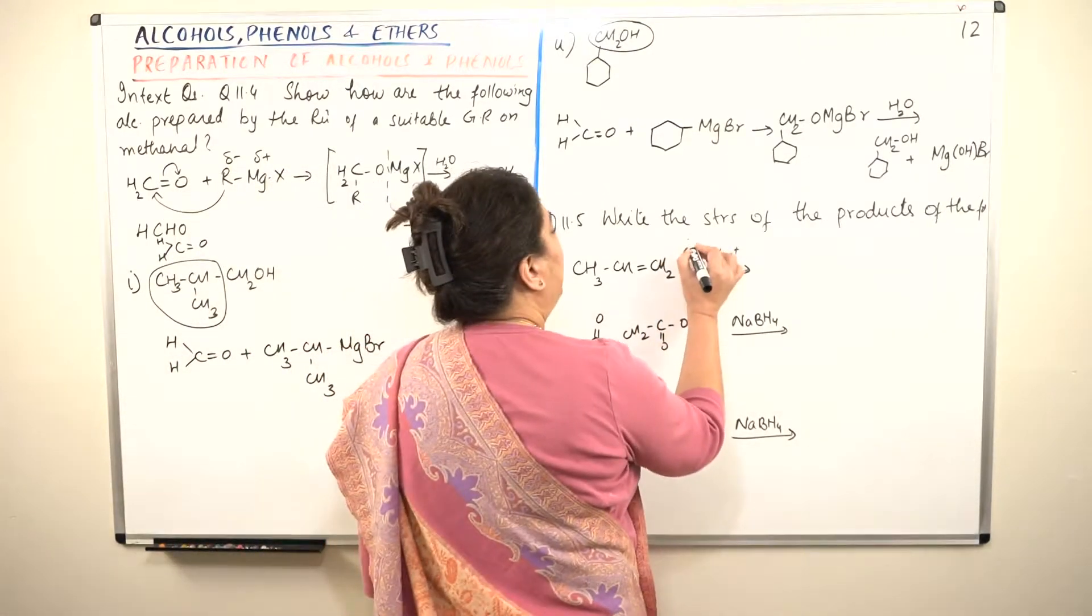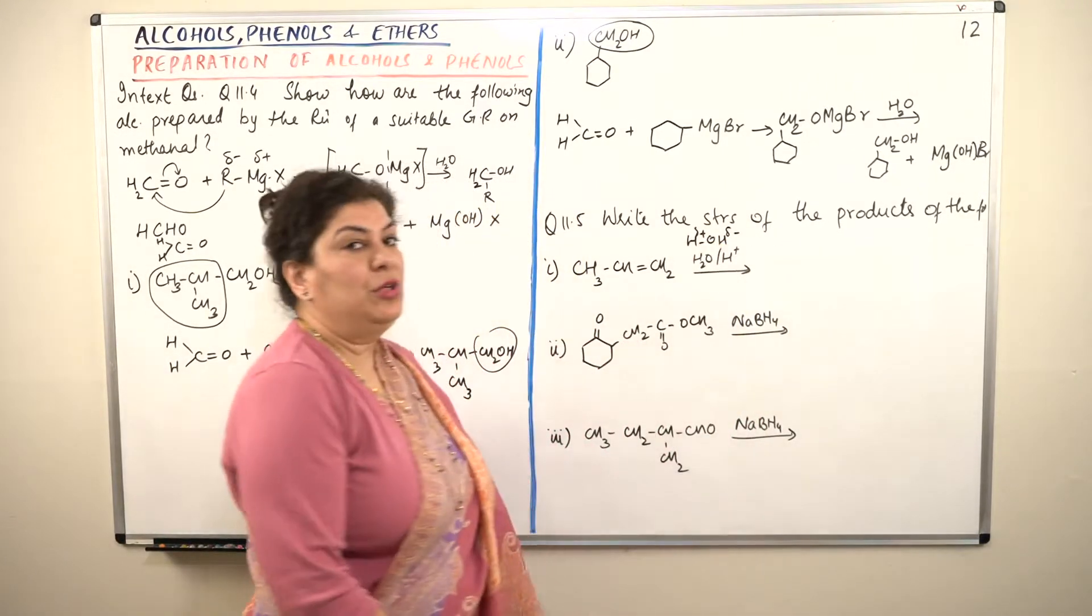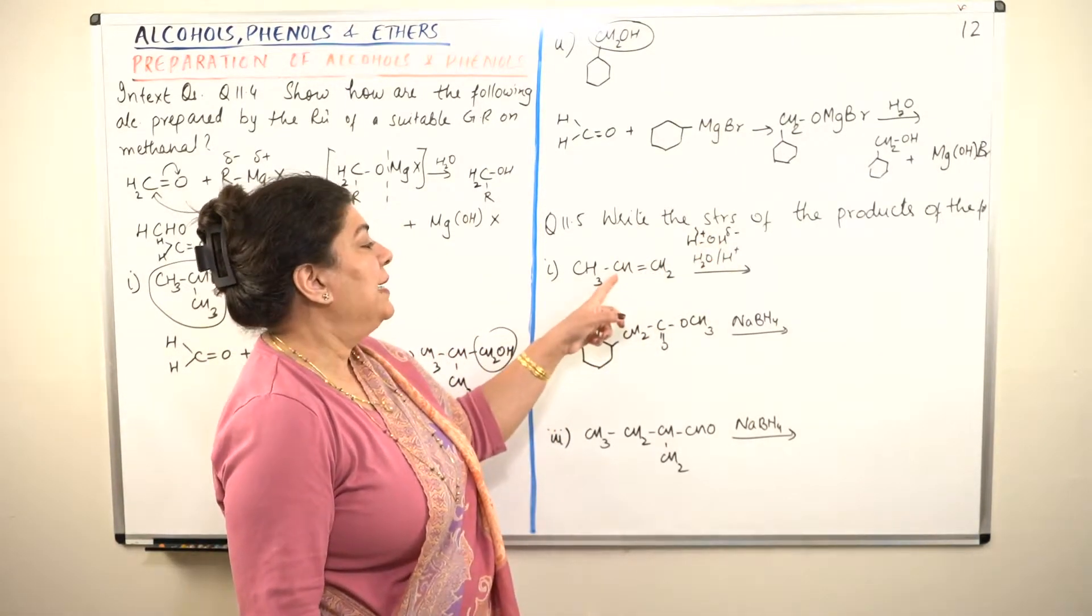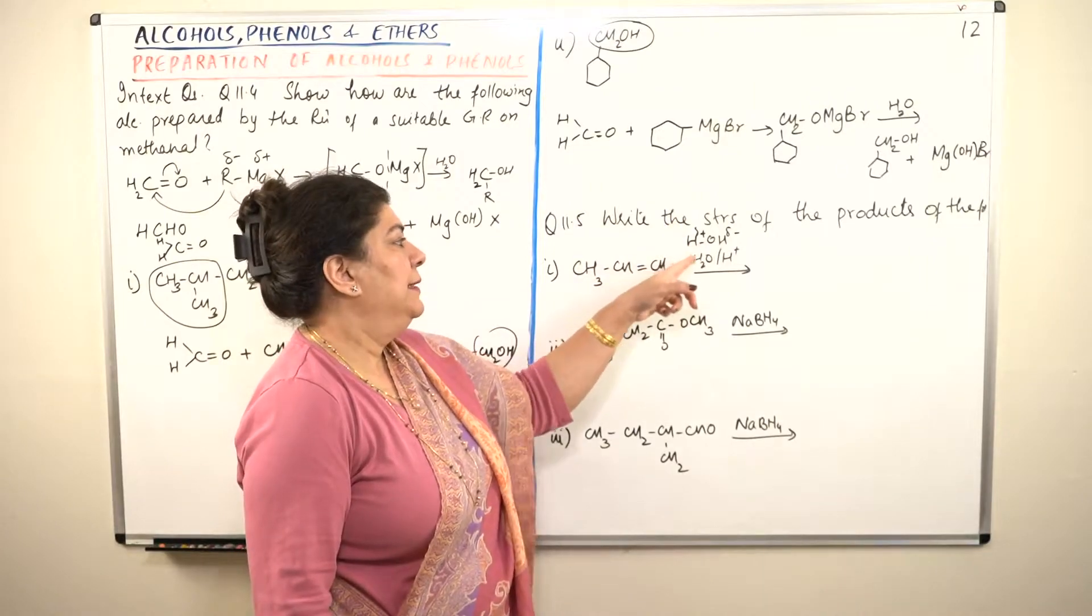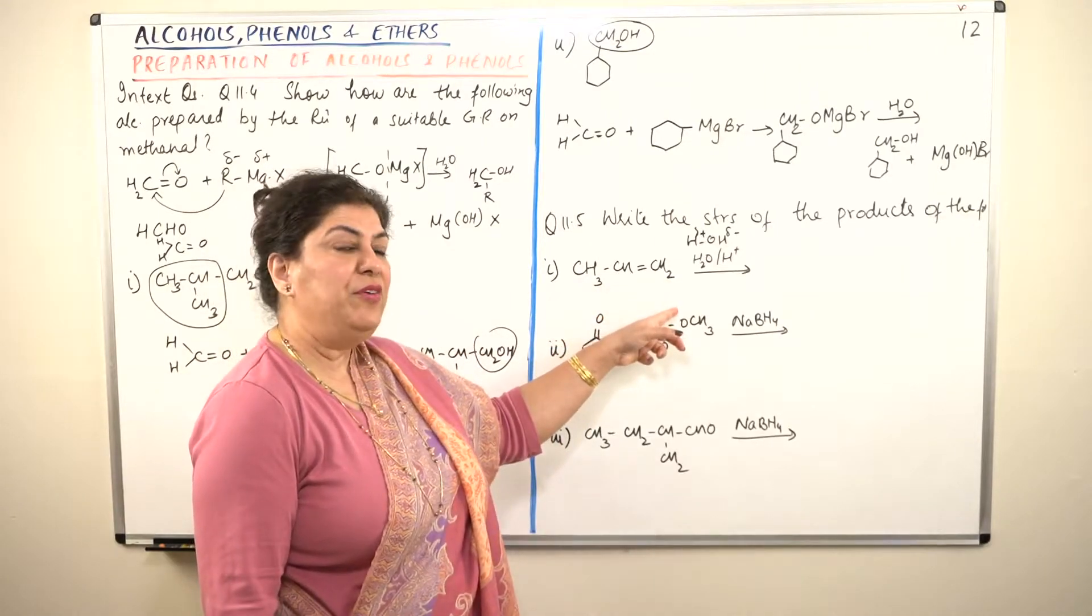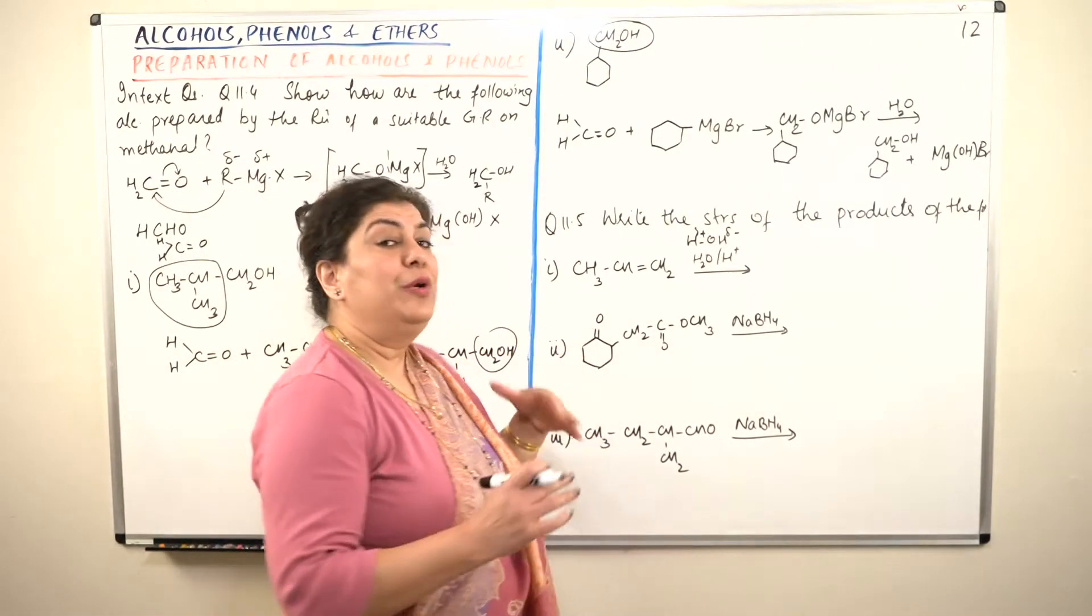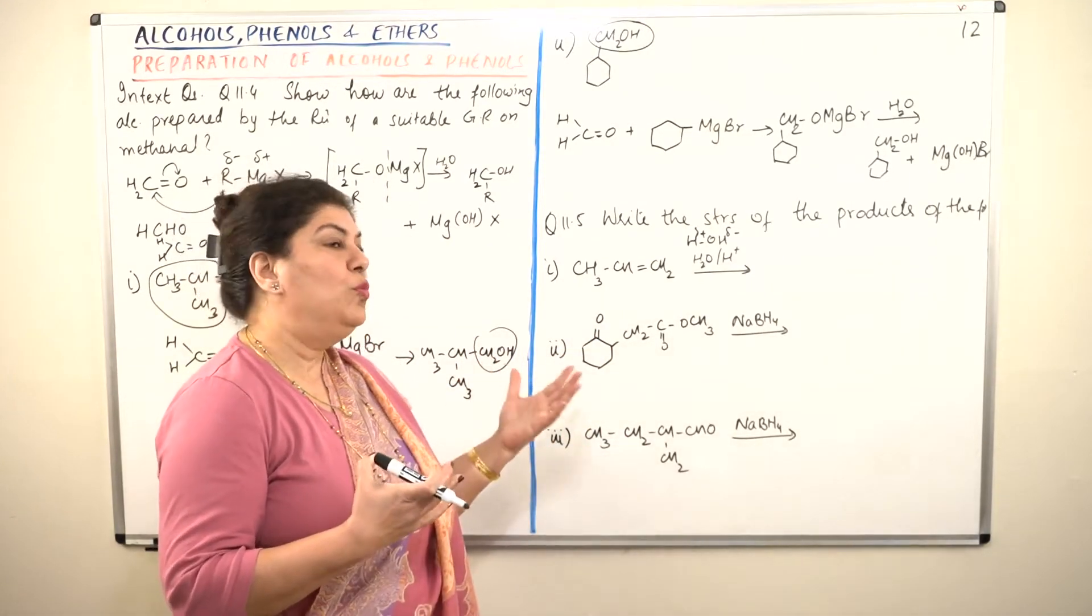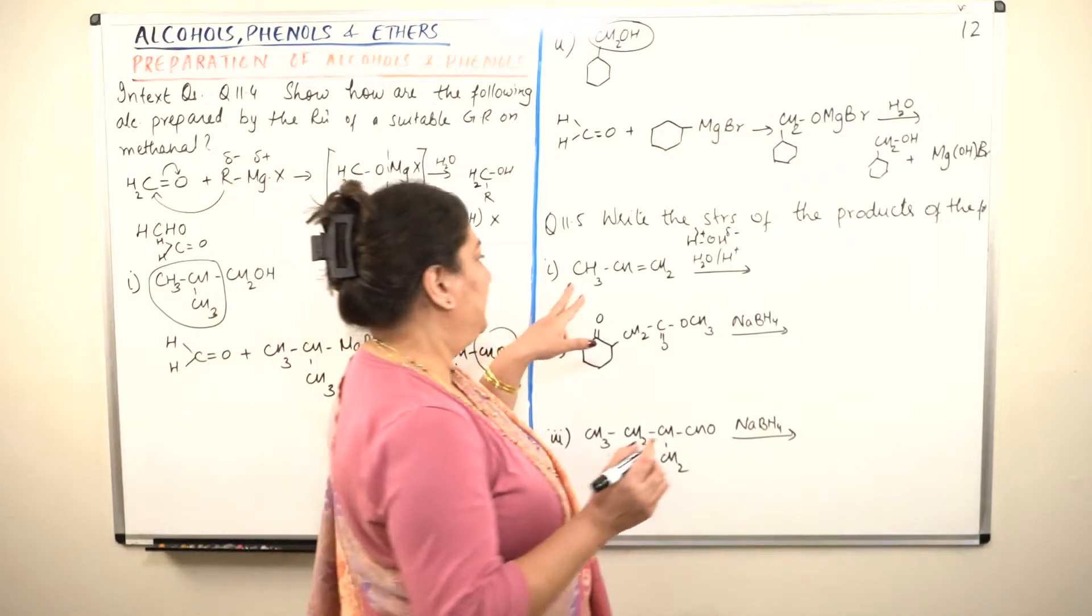And if you remember what we did when we did the preparations of alcohols, I told you that this is a Markovnikov addition. Markovnikov addition says that water breaks down into H positive and OH negative or delta positive and delta negative. So the negative part of the addendum adds on to that carbon which has less number of hydrogens. And the positive part of the addendum, that is water which is being added, the positive part adds to that carbon which already has more number of hydrogens. And the negative part adds to that carbon which has lesser number of hydrogens. That is Markovnikov addition.